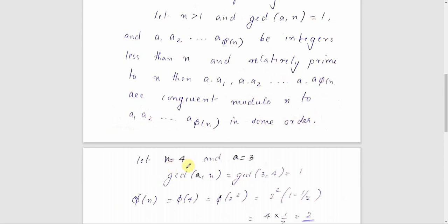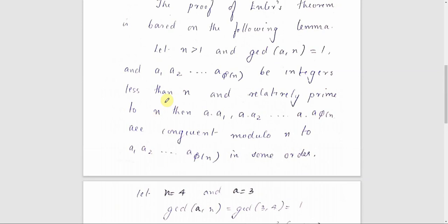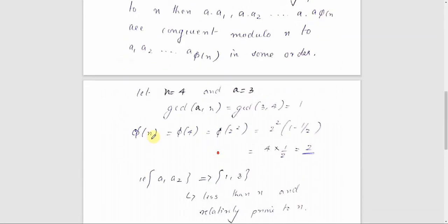Let's see an example. Let n=4 and a=3. Then gcd(3,4)=1. We calculate φ(4) = φ(2²). Using the formula φ(p^k) = p^k · (1 - 1/p), we get φ(4) = 4 · (1/2) = 2. So φ(4)=2, meaning a1=1 and a2=3, the numbers less than 4 and relatively prime to 4.